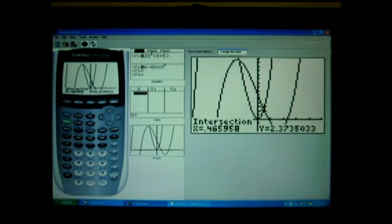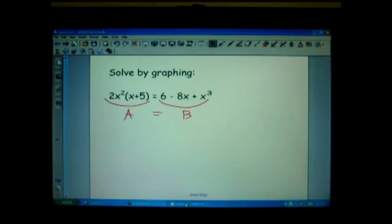My x value there is 0.466 essentially, and the y is 0.237. So I'll use 0.466.